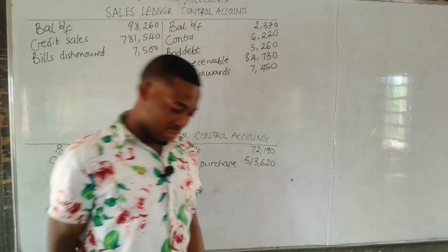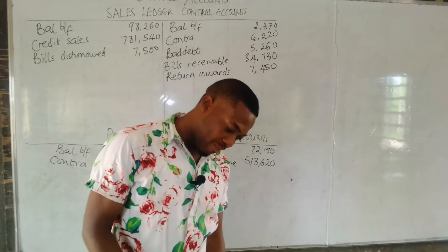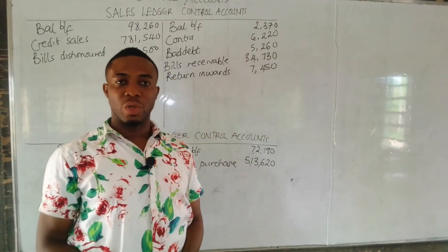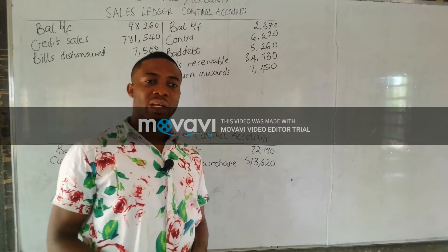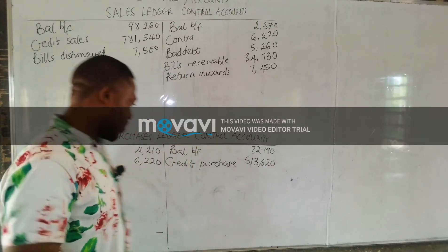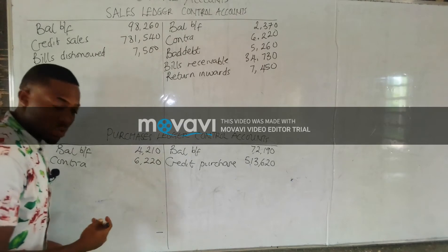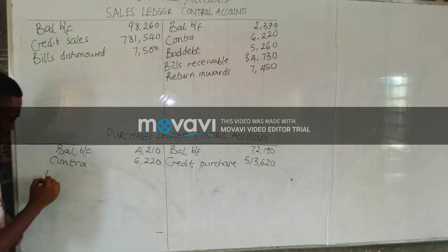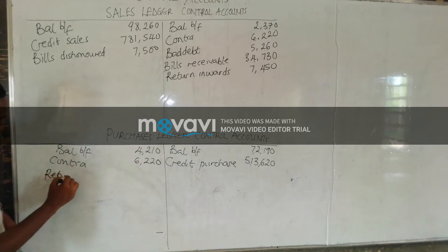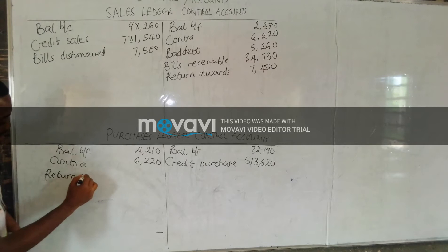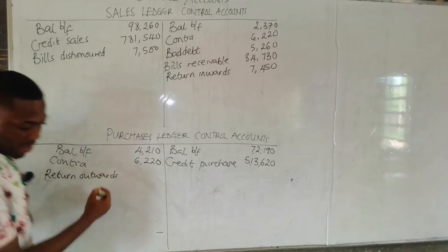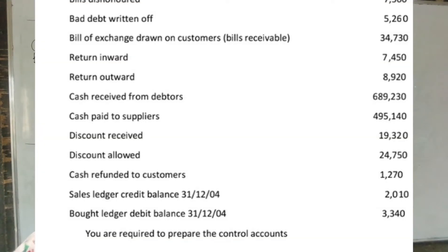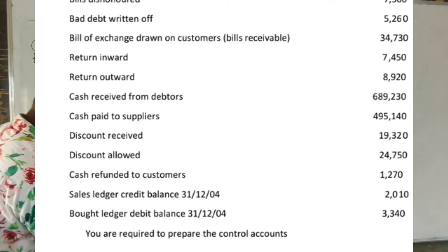The next item is return outwards, which concerns the supplier — these are goods returned back to the supplier. Since the supplier receives back the goods, this is posted to the debit side of the purchase ledger. The amount for return outwards is $8,920.